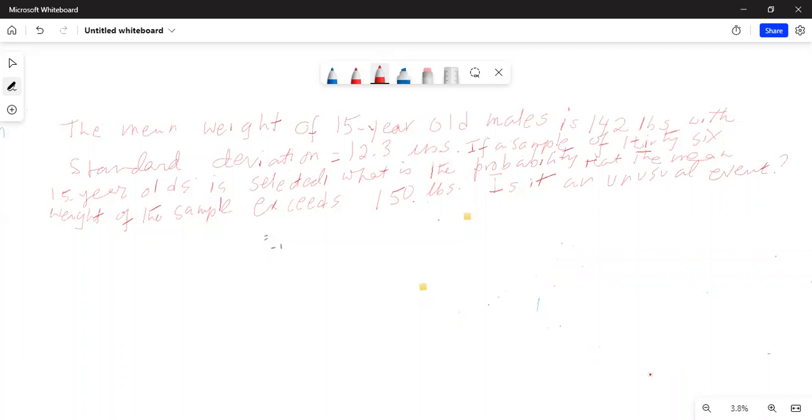So I'll read the problem. It says the mean weight of 15-year-old males is 142 pounds with a standard deviation of 12.3 pounds. And if a sample of 36 15-year-olds is selected, what is the probability that the mean weight of the sample exceeds 150 pounds? Is it an unusual event?